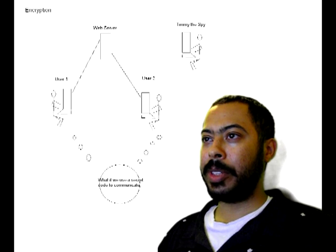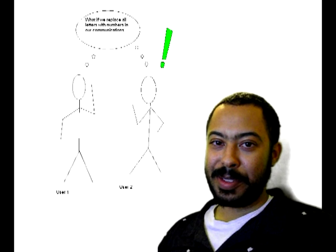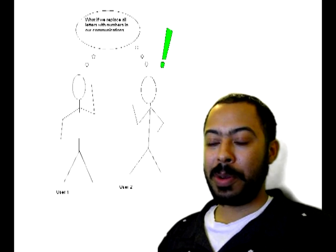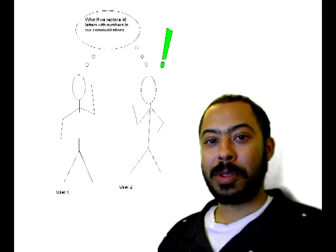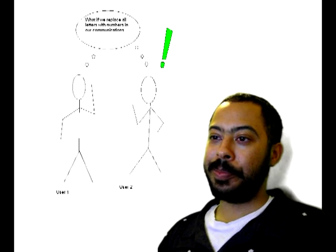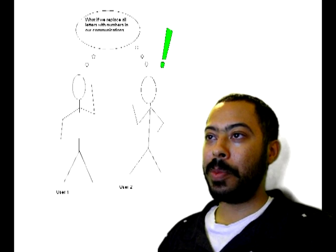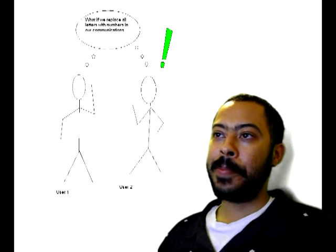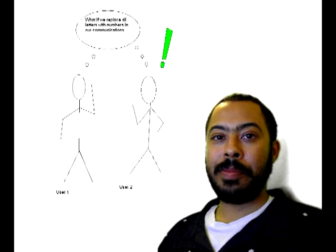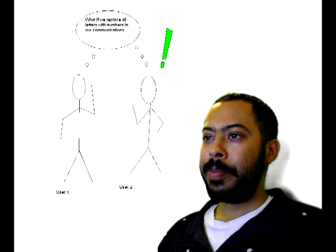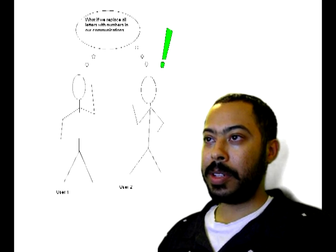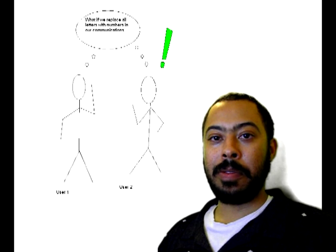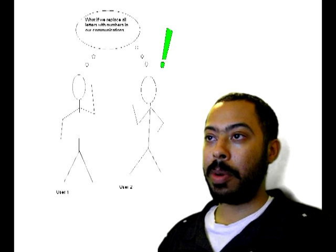This is very basic as far as encryption goes — today's encryption uses very complex algorithms to determine keys. But to keep it simple, User 1 and User 2 decide to replace all the letters in their text communications with numbers: A is 1, B is 2, Z is 26. Nothing too complicated, just for explanation purposes. They both now have knowledge of the key to encrypt and decrypt information.